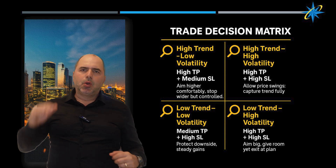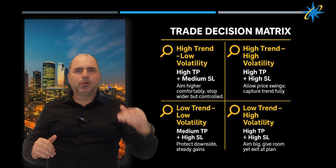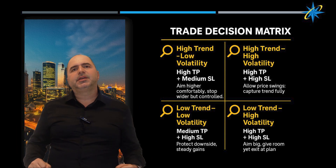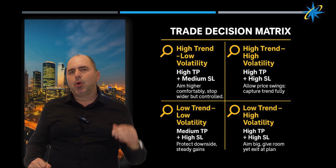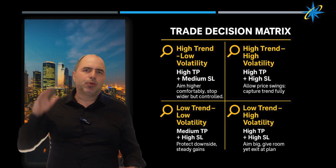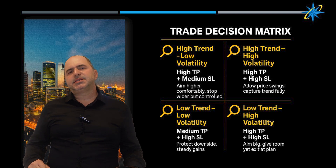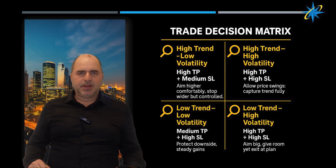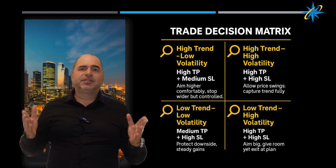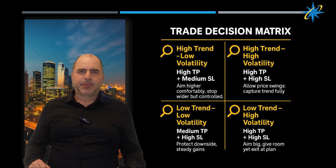Low trend, low volatility comes with medium TP and high SL. Low trend, high volatility comes with high TP and high SL. In essence, let the trend determine your TP and let volatility determine your SL.